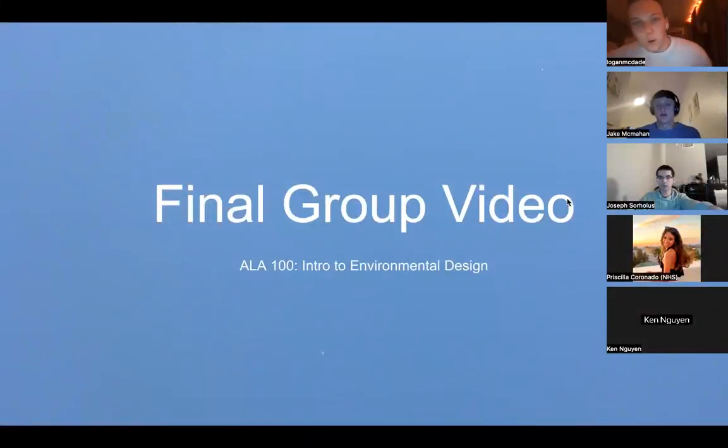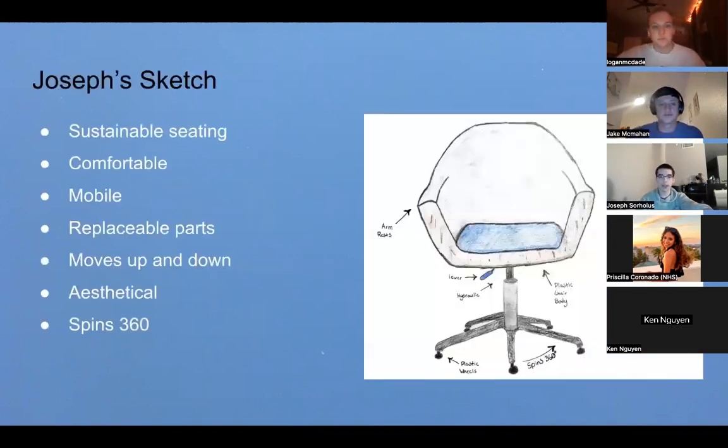Alright, this is the final group video for discussion group 20 for ALA. Let's get started. This is my sketch - sustainable seating. See that cushion right there? That cushion can be replaced if it gets a stain on it, just replace the cushion.